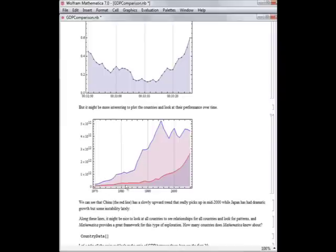Here's that of Japan's, here's that of China's. We can see that China has a slowly upward trend that actually picks up around mid-2000, while Japan had some dramatic growth around the 90s, but then leveled off. So we can see why this relationship increases. Is it that of Japan greatly increasing or China's great explosion? We can get that from Mathematica.